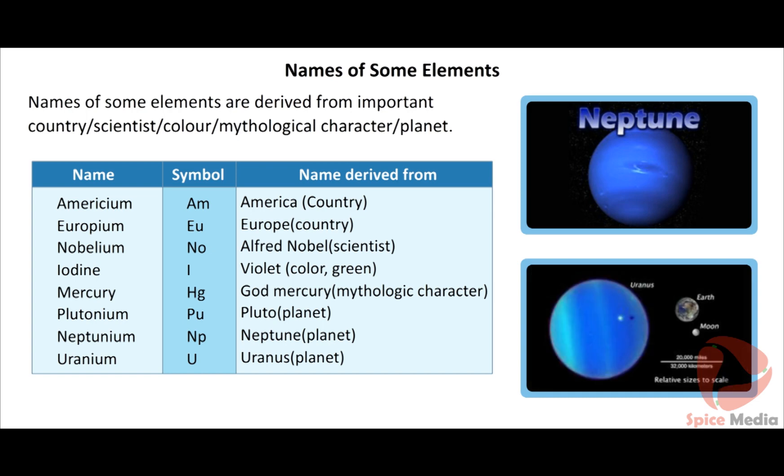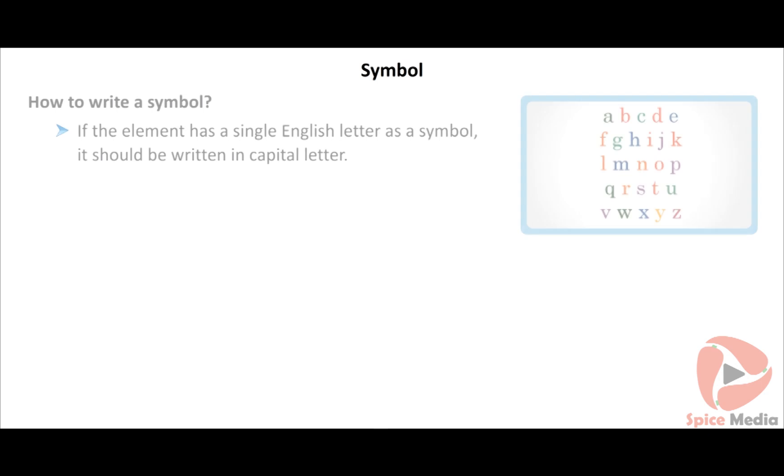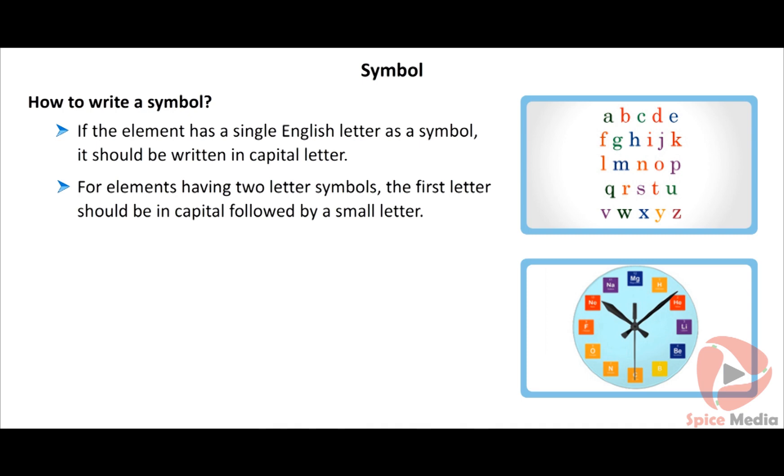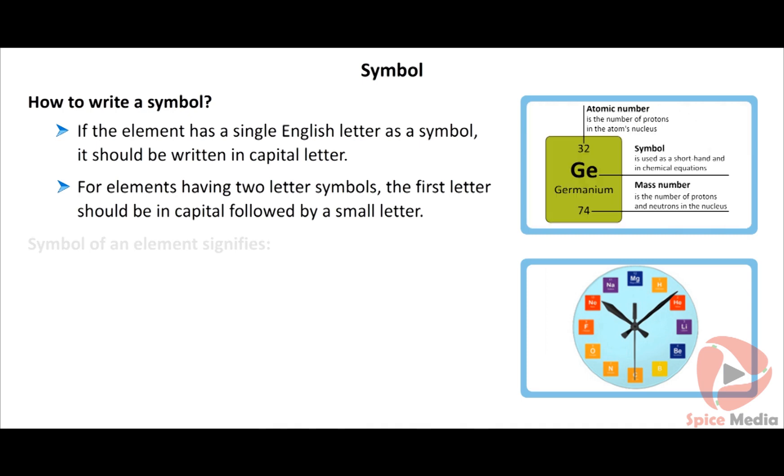If the element has a single English letter as a symbol, it should be written in capital letter. For elements having two letter symbols, the first letter should be in capital followed by small letter. Symbol of an element signifies name of the element and one atom of the element. For example, the symbol N stands for the element nitrogen and one atom of nitrogen.